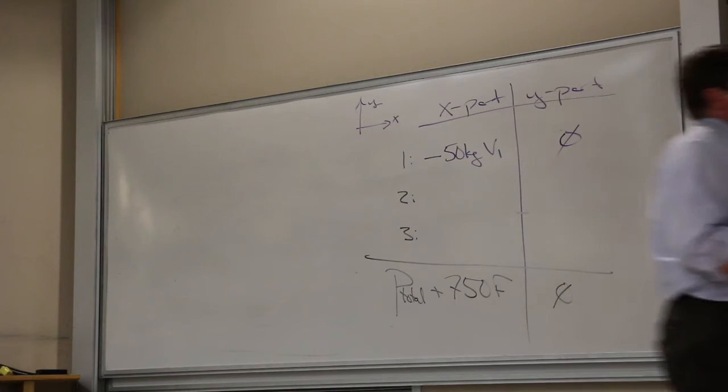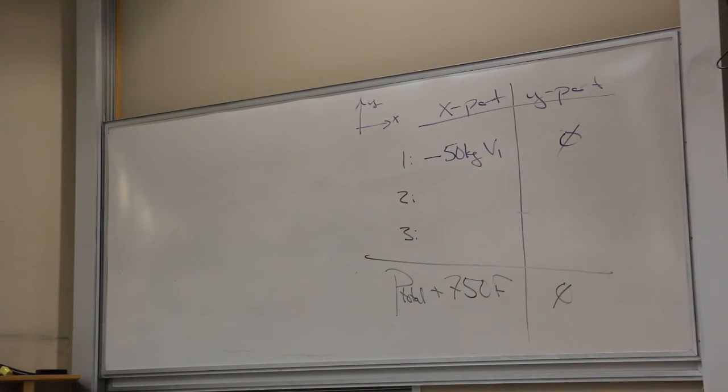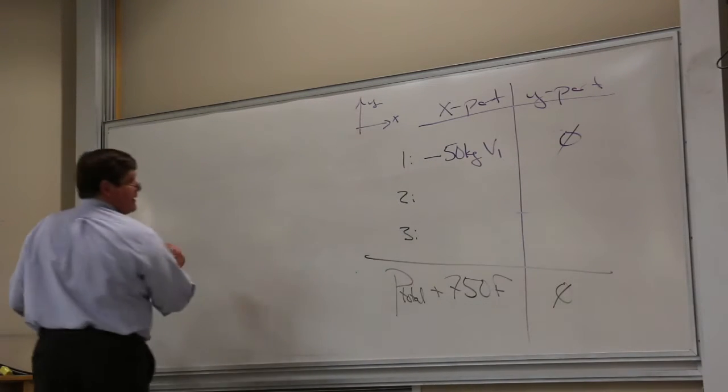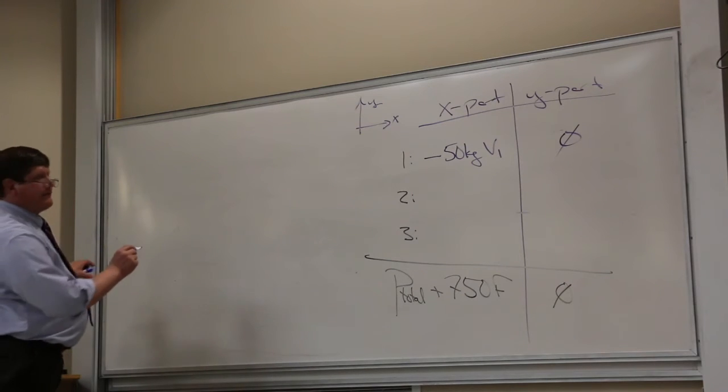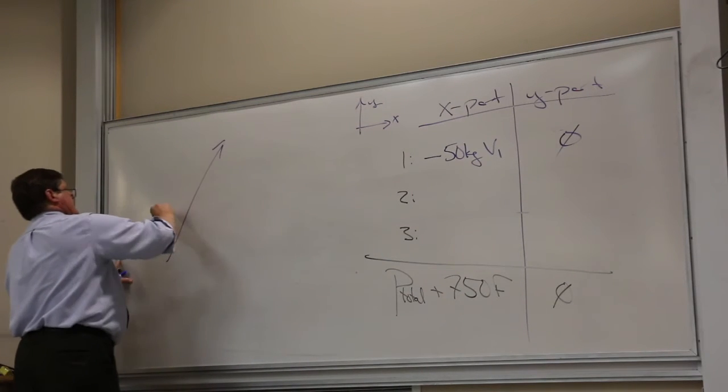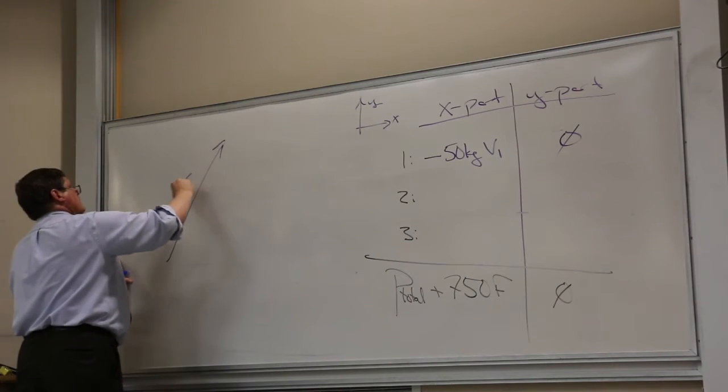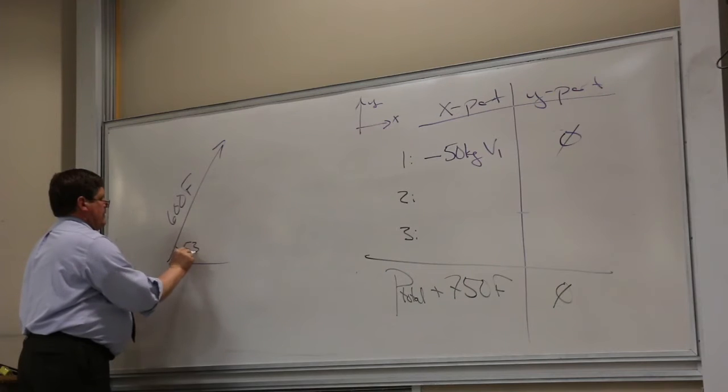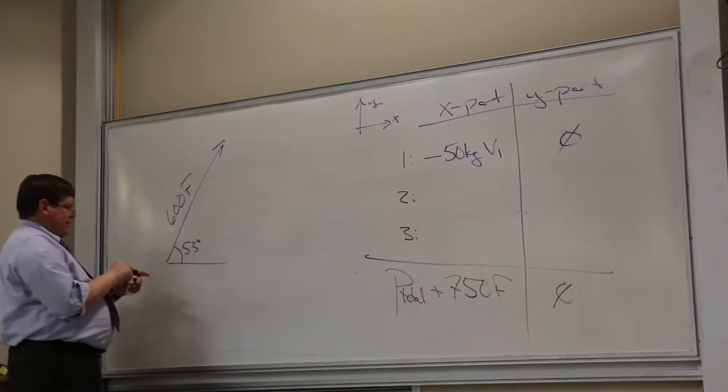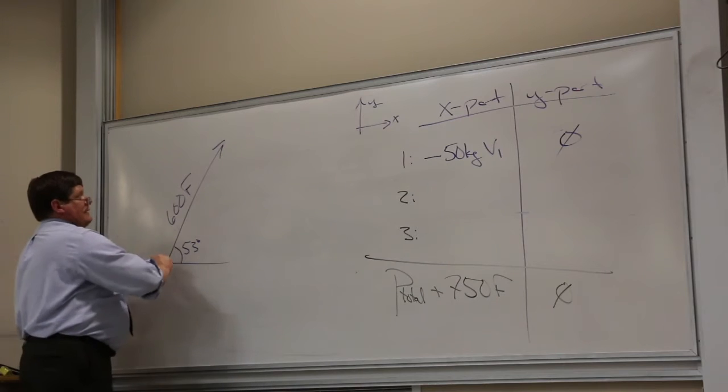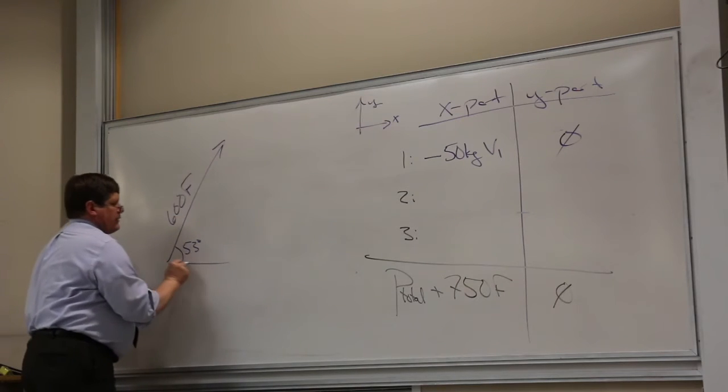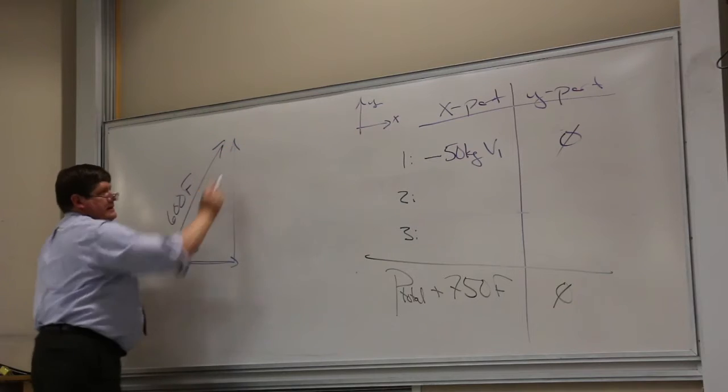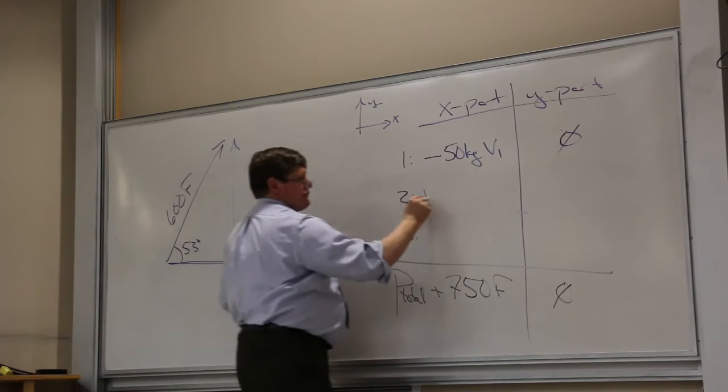Now, if I look at fragment 2, it's got a momentum of 120 times 5, or 600 franc high, and it's going at an angle of 53 degrees. If I break that up into its X part, to go up and to the right, I've got to go to the right and I've got to go up. So I'm going to have a positive X and a positive Y.